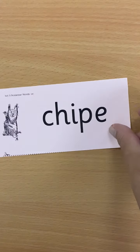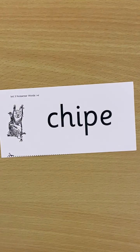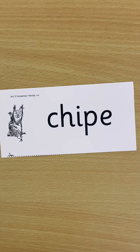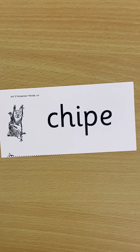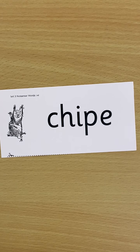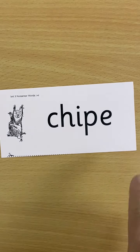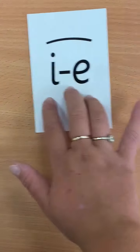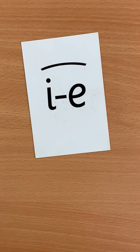Now I'd like you to have a go at Fred-ing in your head for this word. Look for the special friends and Fred in your head, then say the word out loud. That word is chipe. Well done. You now know the I sound.